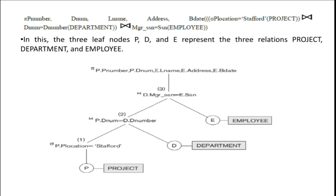It will select the department number for the Stafford location, and the manager for that particular department will also be selected. In this tree, the leaf nodes P, D, and E represent the three relations: Project, Department, and Employee. First, it will select the project location Stafford from the project table.